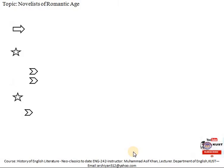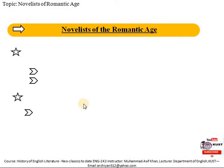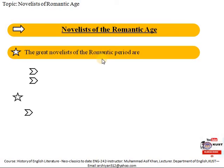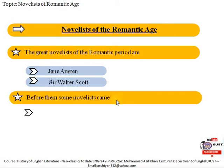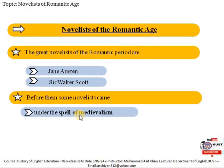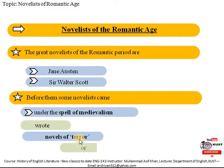Let's move towards the novelists of the Romantic Age. The colossal personalities of the Romantic period include Jane Austen and Sir Walter Scott. But before them, there were some novelists who came under the charm of medievalism, one of the major characteristics of Romantic Age literature. Those novelists started writing novels of fear, horror, or terror — what we also name Gothic novels.